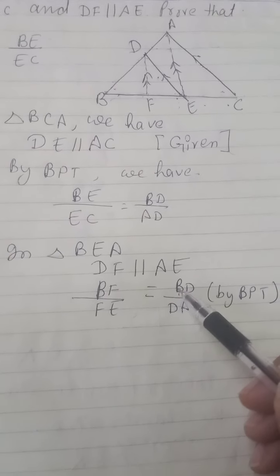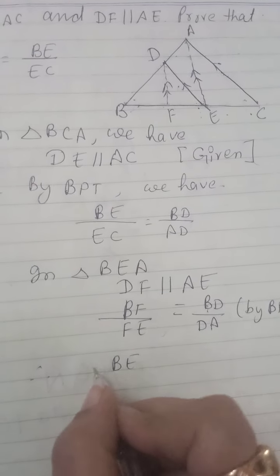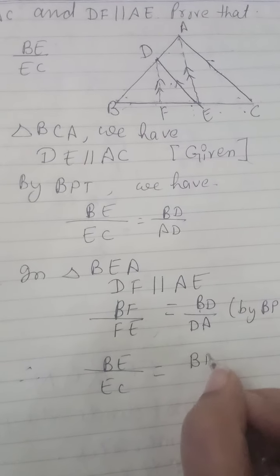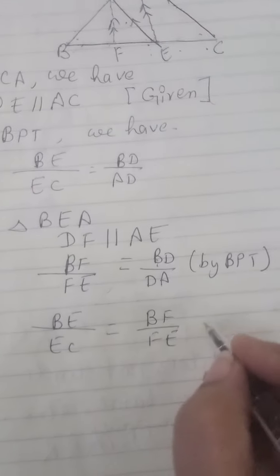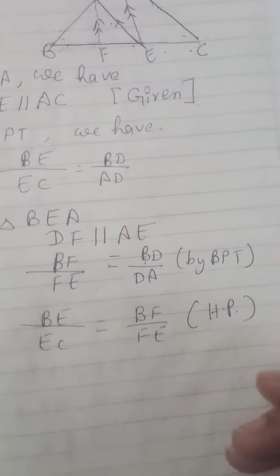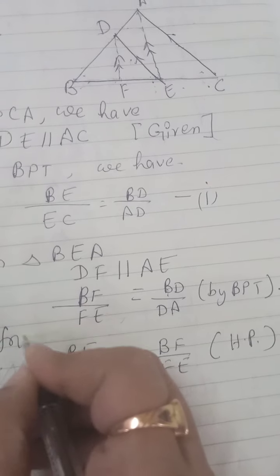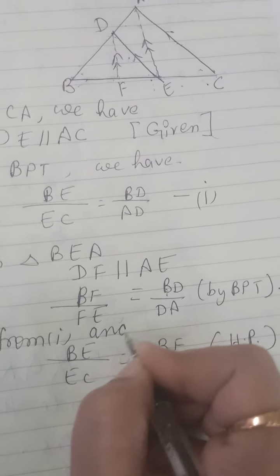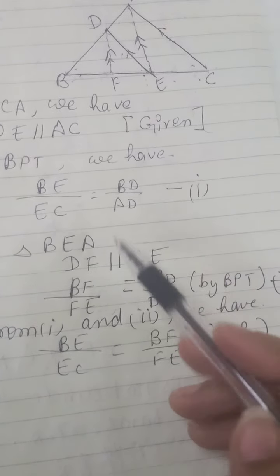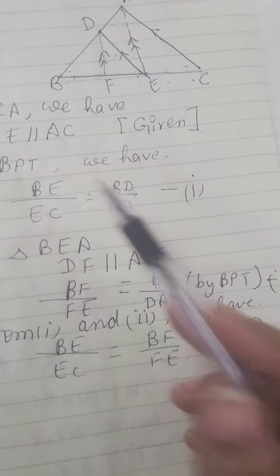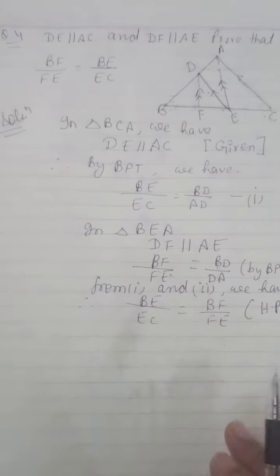Now we take the second triangle BEA. In triangle BEA, DF is parallel to AE — this is given. Therefore by BPT, BF upon FE is equal to BD upon AD.